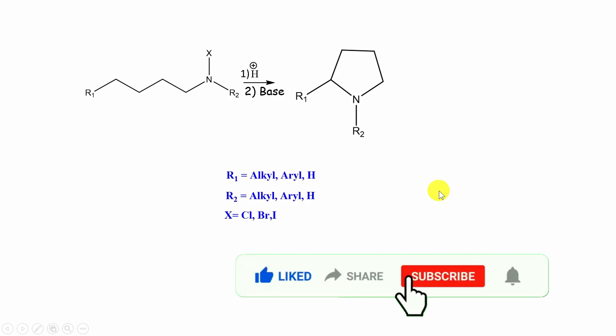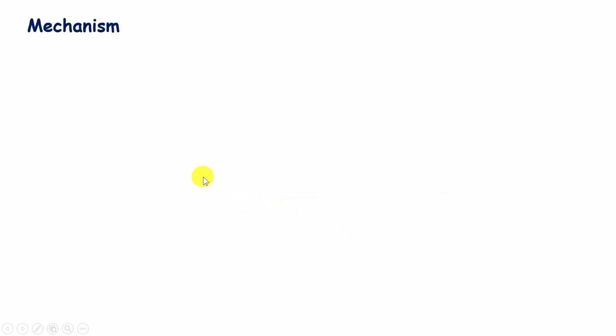Here, R1 and R2 are alkyl, aryl, or hydrogen, and X may be any halogen like chlorine, bromine, or iodine. Then come to the mechanism of this reaction.